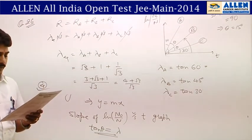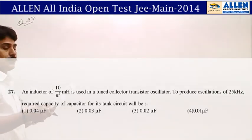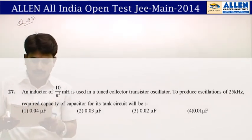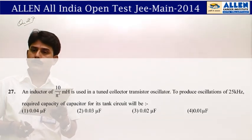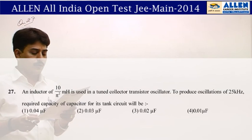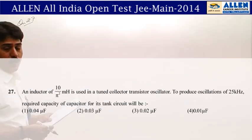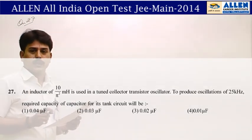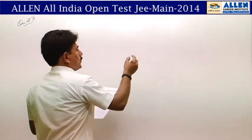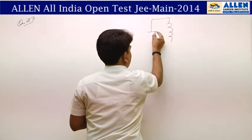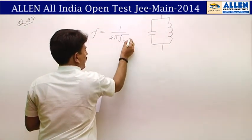Now question number 27: an inductor of 10/π² milli-henry is used in a tuned collector oscillator to produce oscillations of 25 kHz. We need to find the required capacitance for the tank circuit. The LC parallel circuit has frequency given by f = 1 / (2π√LC).